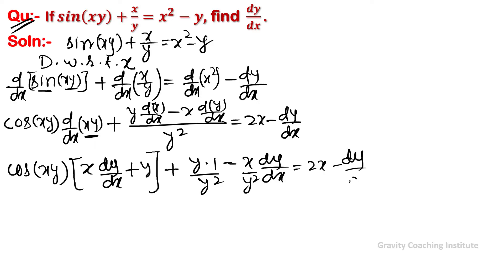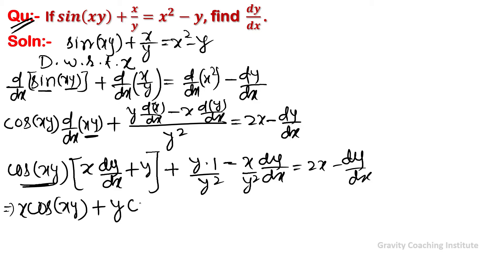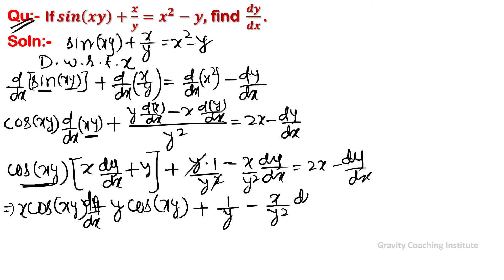Multiplying cos(xy) through, this becomes x·cos(xy) plus y·cos(xy). And the x/y term gives 1/y minus (x/y²)·dy/dx, equal to 2x minus dy/dx.